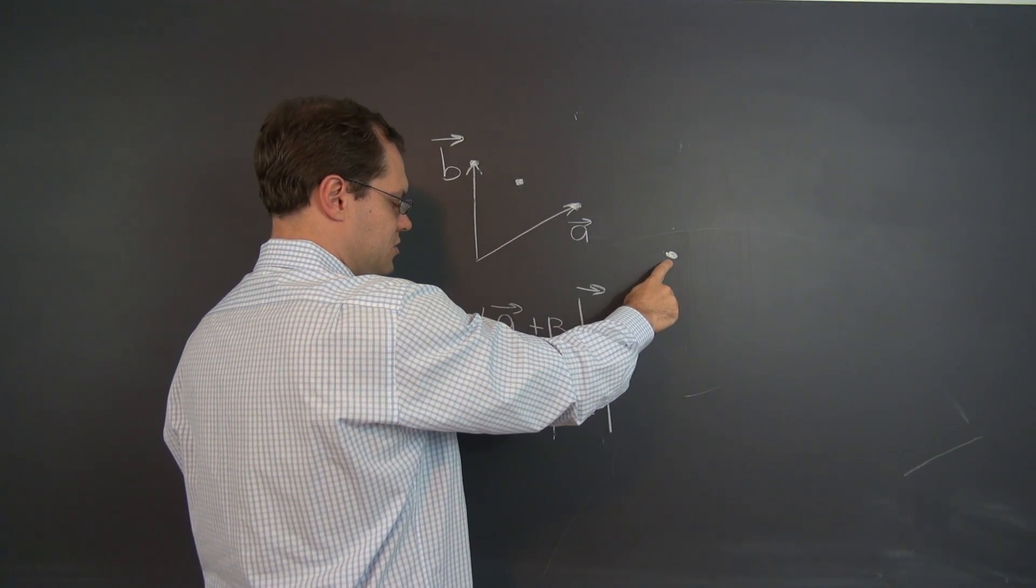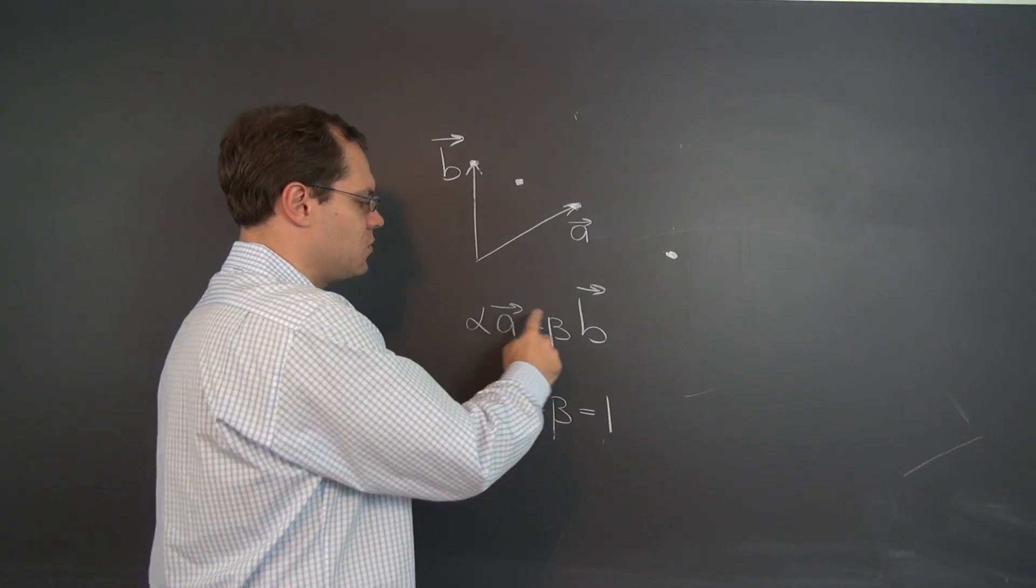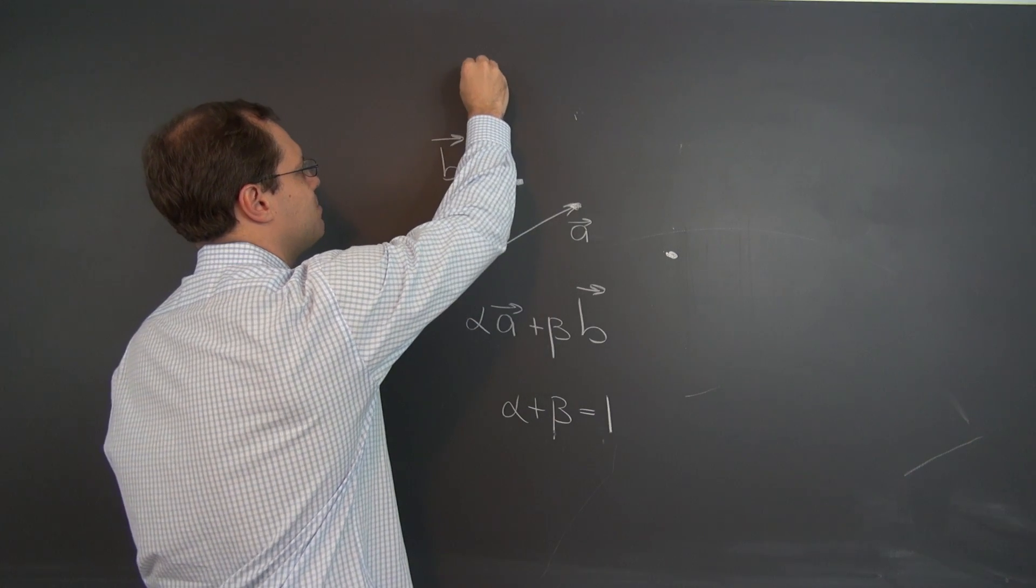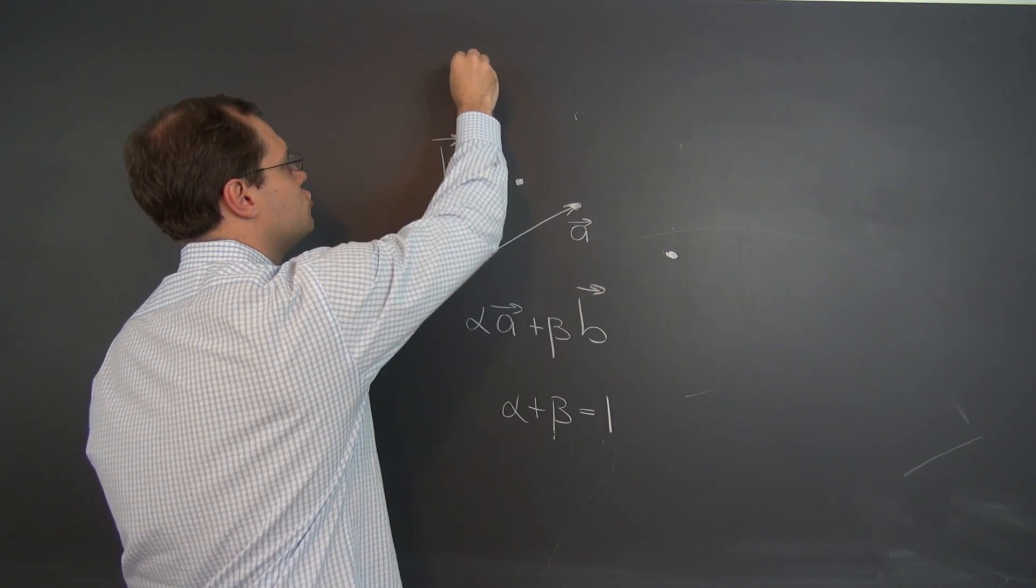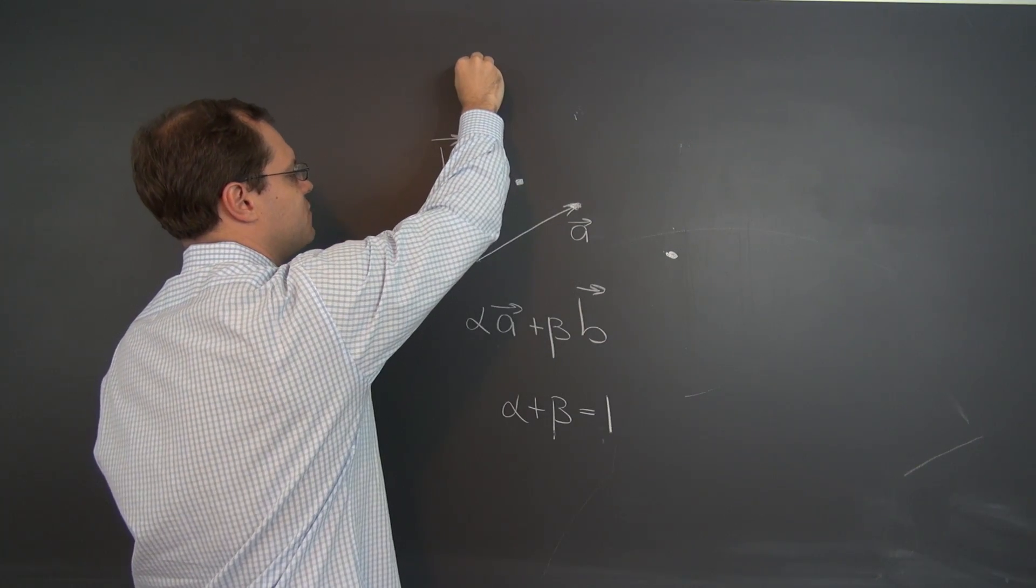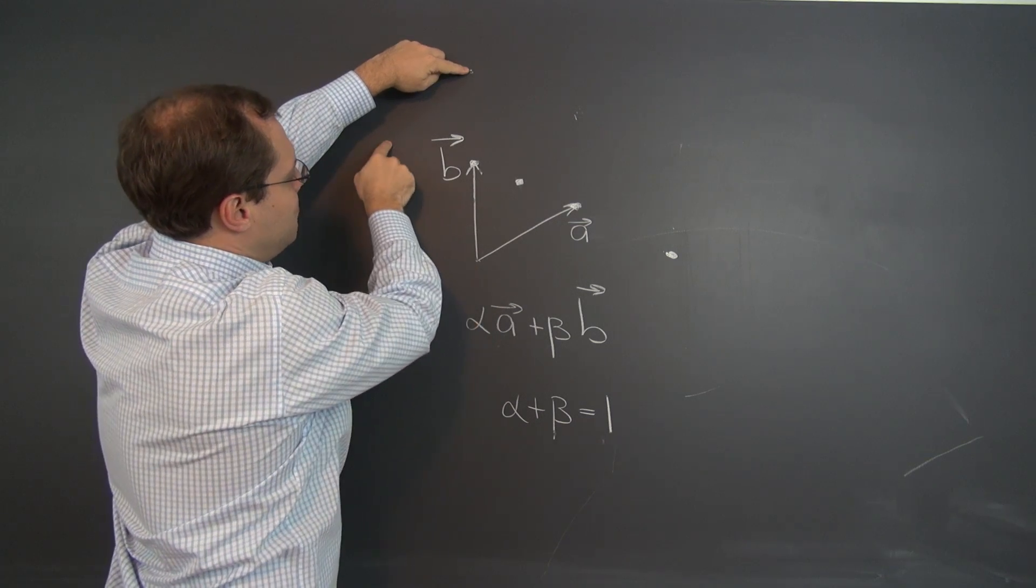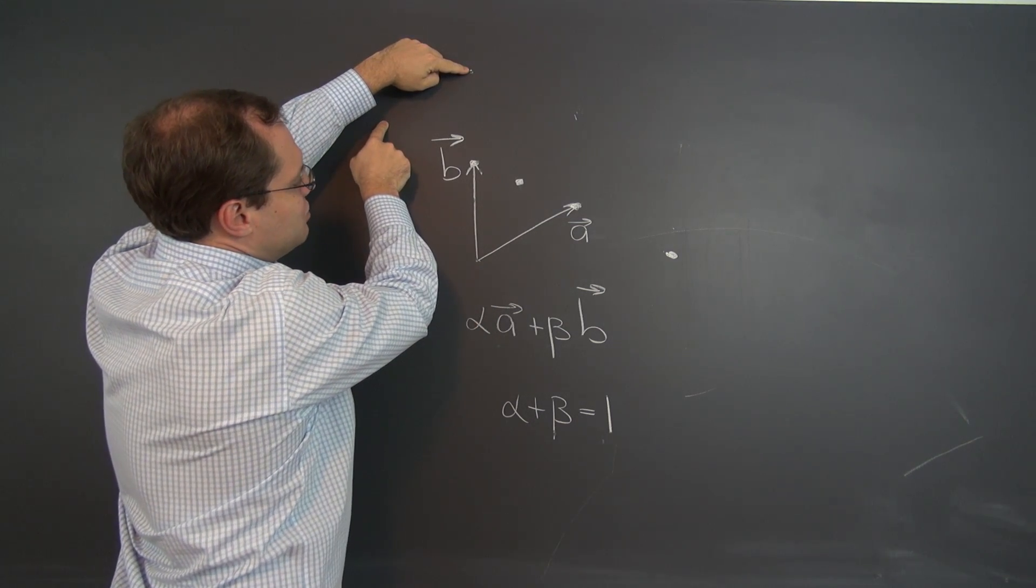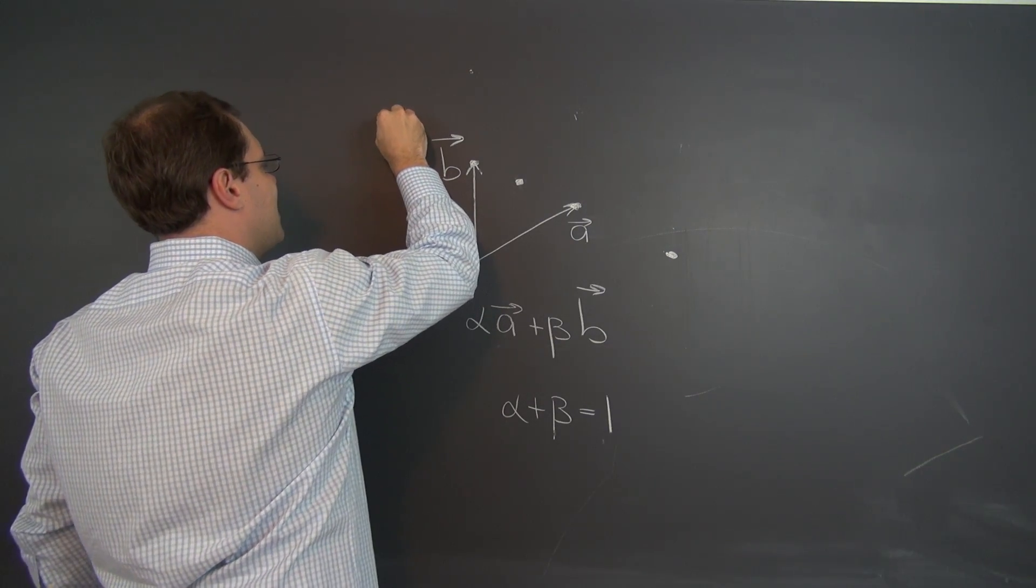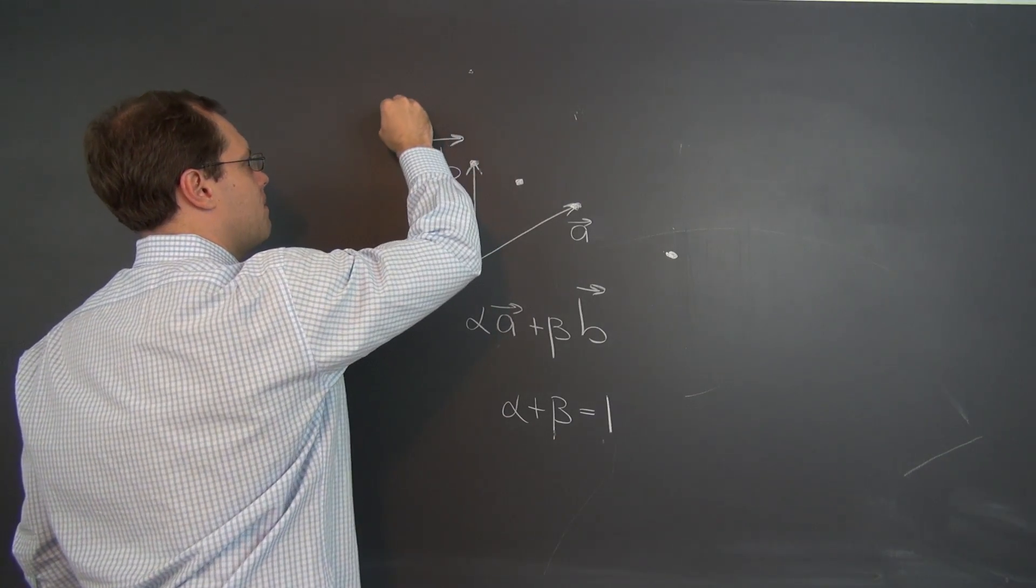So this corresponds to alpha equals 2 and beta equals minus 1. Now, how about minus 1 and 2? So 2B, it's minus A plus 2B, so let's do 2B minus A. See, this is the tip of 2B. And from here, I will go in the direction of minus A. Not in the direction of minus A, but by the amount of minus A. And that will put us right here. So this is 2B minus A.